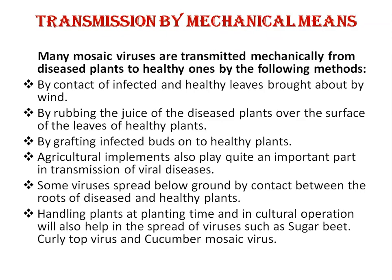Transmission by mechanical means: many mosaic viruses are transmitted mechanically from diseased plants to healthy plants by contact of infected and healthy leaves brought about by wind, by rubbing the juice of the diseased plant over the leaf surface of a healthy plant, by grafting infected buds onto healthy plants, and by agricultural implements such as sickle, knife, seed drills, and spade.